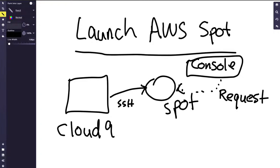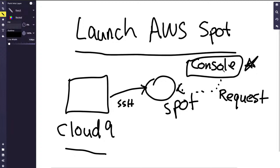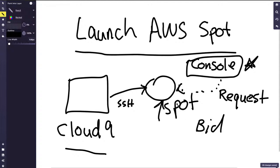Let's go through and launch an AWS spot instance. First we'll set up a Cloud9 environment, and then I'll go to the console and tell the spot request mechanism to launch a new instance. This allows us to effectively bid on a machine and get it at around 90% off. Once it's launched, I can SSH via the Cloud9 environment.